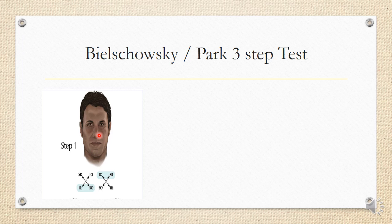Step one: identify which eye has hypertropia in primary gaze. If the right eye has hypertropia, it could be due to paralysis of the depressor muscles of the right eye — superior oblique or inferior rectus — or paralysis of the elevator muscles of the left eye — inferior oblique or superior rectus. This narrows the field to four muscles.